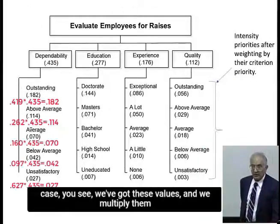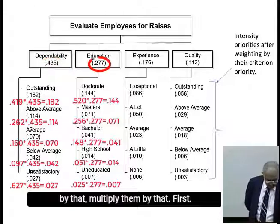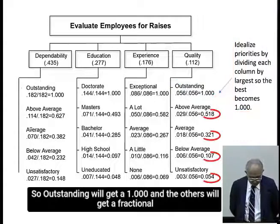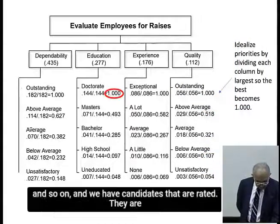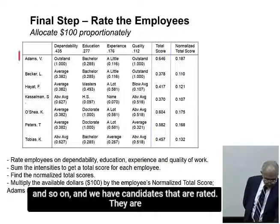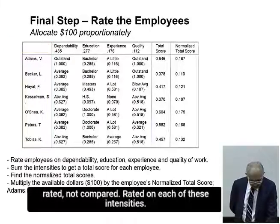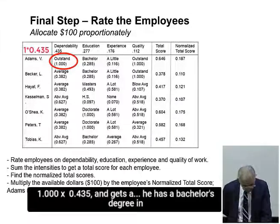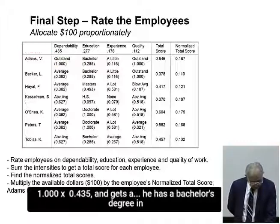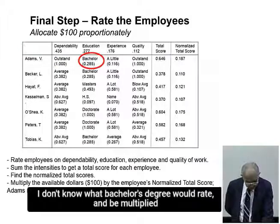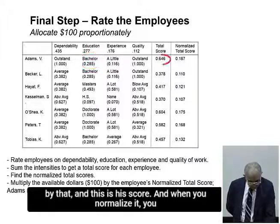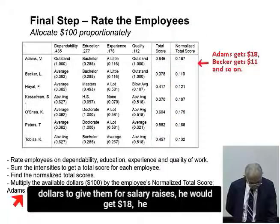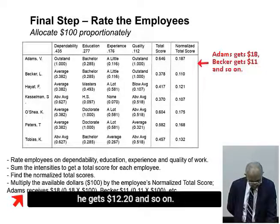We've got these values and we multiply them accordingly. First we divide by the highest value, so outstanding gets a one and the others get fractional values, and doctorate gets a one and so on. Candidates are then rated — not compared — on each of these intensities. Adams is outstanding on dependability and gets one times 0.435; he has a bachelor's degree which gets multiplied by its weight. When you normalize the scores, if you had $100 to give in salary raises, he would get $18, another gets $11, another $12.20, and so on.